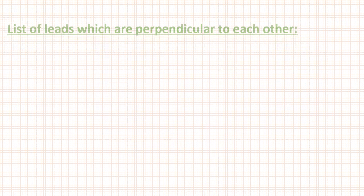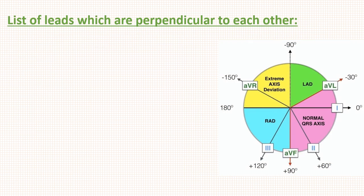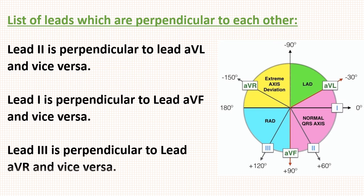These are the list of leads which are perpendicular to each other. Lead 1 is perpendicular to lead aVF and vice versa. Similarly, lead 2 and lead aVL are perpendicular to each other. And lead 3 and aVR are perpendicular to each other.